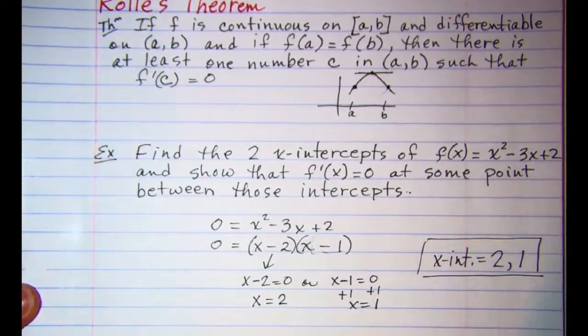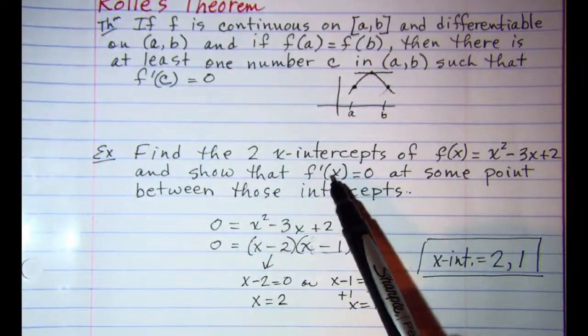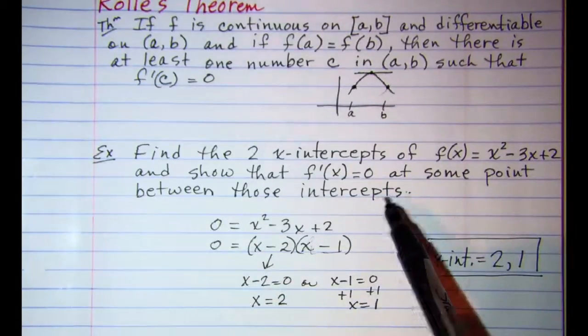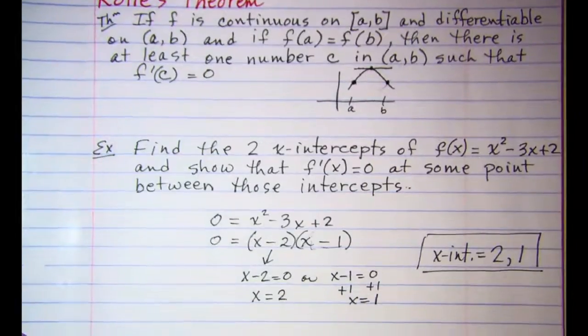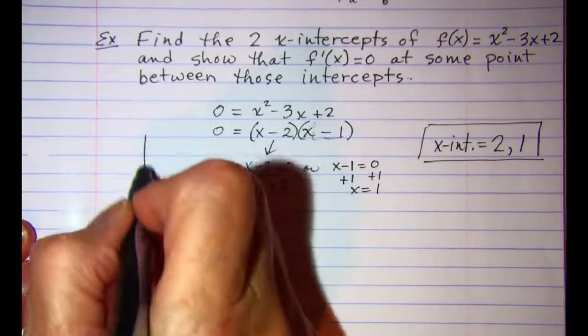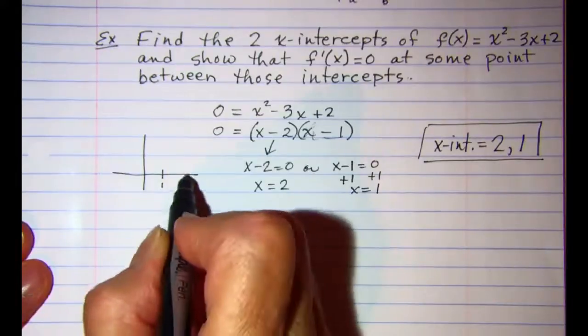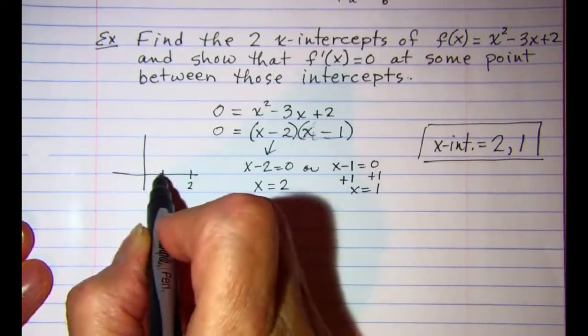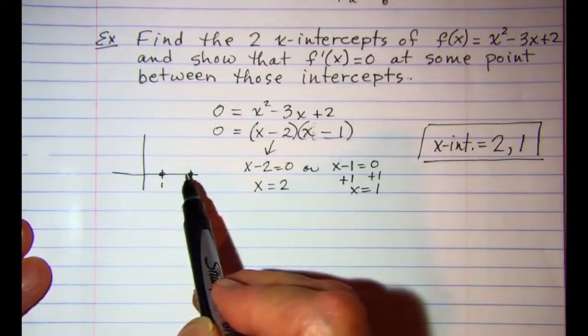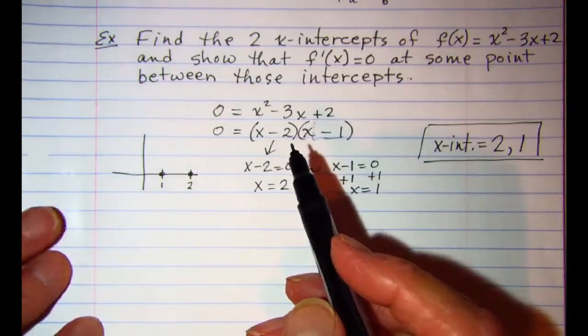The second part of the problem says to show that f prime of x is equal to 0 at some point between these intercepts. Now let me point out that if you have an intercept at 1 and an intercept at 2, in both of those cases the y value is equal to 0. So we can apply Rolle's theorem.